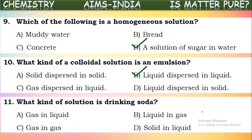What kind of solution is drinking soda? To prepare soda, water is taken in a container and carbon dioxide gas is mixed in at high pressure. As pressure increases, the solubility of gases into liquids increases, so carbon dioxide is dissolved into the water and soda is formed. So soda is a gas-in-liquid mixture — carbon dioxide gas dissolved into water.